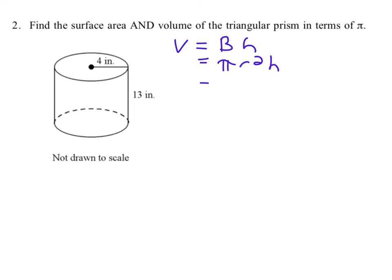And then that's times the height. So we say π, the radius is 4 squared times the height, which is 13. And that gives us then π times 16 times 13, and we multiply 16 times 13, we get 208.